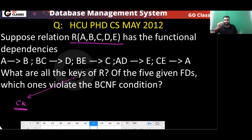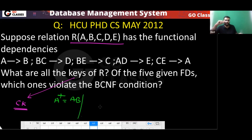First, check which attribute does not appear on the RHS — every attribute appears on the RHS. So let's find A-plus: A-plus gives you AB, that's it. B-plus also cannot give you much, C-plus also cannot, D-plus is also not useful. Only A can give you AB; other things are not as useful.